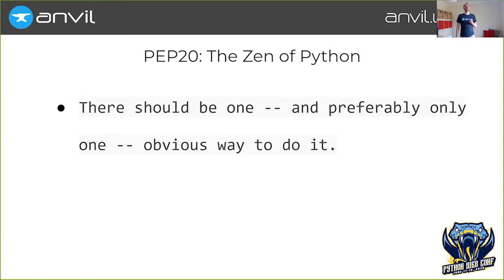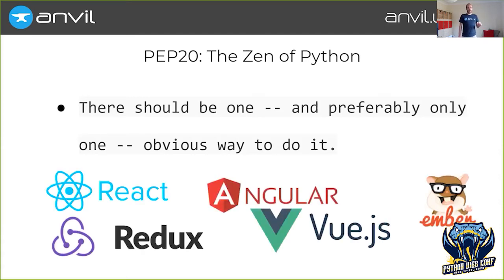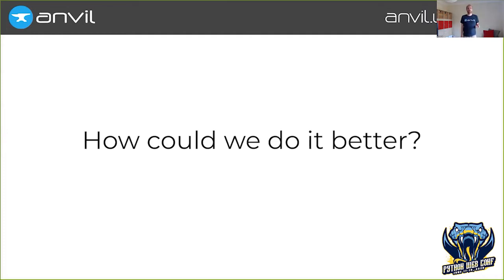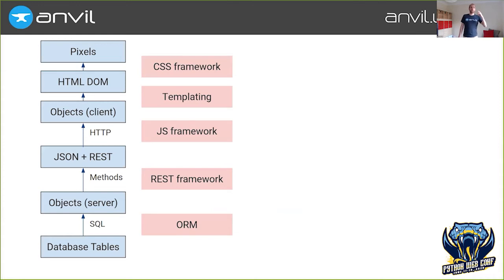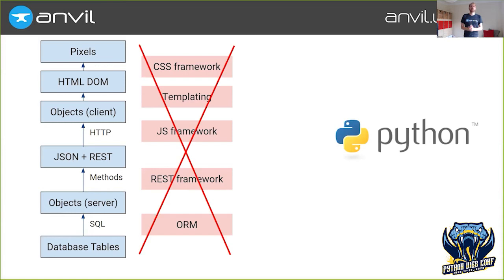There should be one and preferably only one way to do it. So if the web is actually horrendously unpythonic and violates a bunch of values that we have for very good reasons, how could we do better? Well, Anvil is our attempt to answer that question. And the way we do this better is to do away with all of these translation layers, by replacing all of these representations of your data with Python objects.